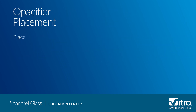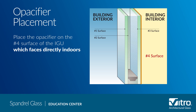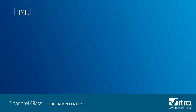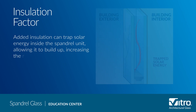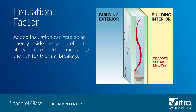Here are some other things to consider when using IG spandrel glass. First, we recommend placing the opacifier on the fourth surface of the IG to avoid potential release of VOCs inside the IG. Second, if insulation is going to be used with an IG panel, it's important for the fabricator to ensure that the adhesive and insulation are designed for such a use.